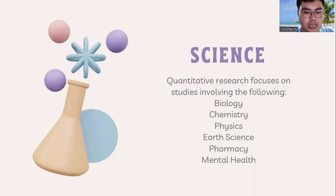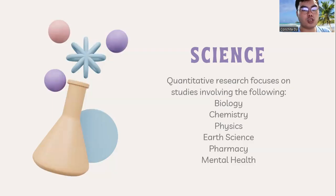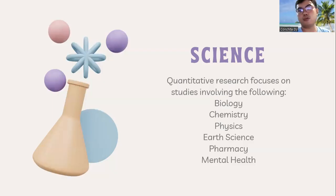In chemistry, we can perform experiments on different chemicals — normally in chemistry we do experimental research designs, and the same applies in physics, where we can use motion as a research topic. In earth science, we can focus on topics like reduce, recycle, and reuse as solutions to prevent global warming. We can focus on climate, disasters, and the rehabilitation of infrastructures and cities.